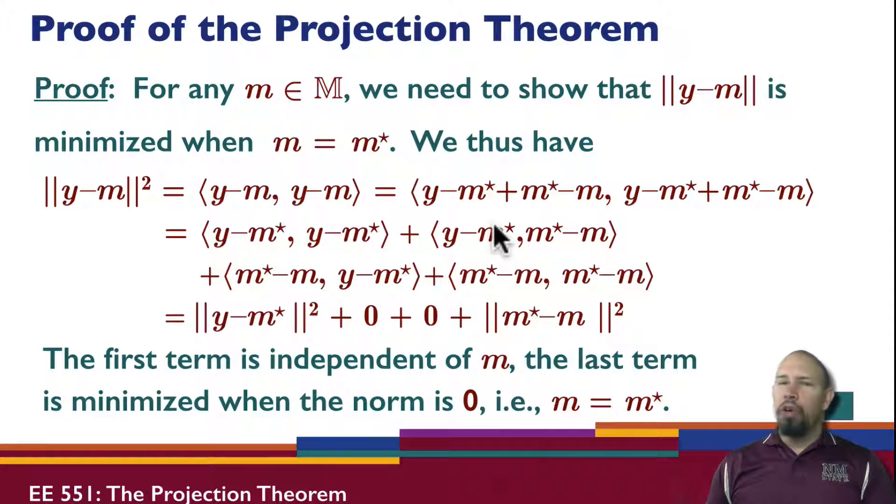We have already shown in Lemma 2 that the cross terms are both zero. So the inner product of y minus m, norm squared, is equal to y minus m star, norm squared, plus m star minus m, norm squared.